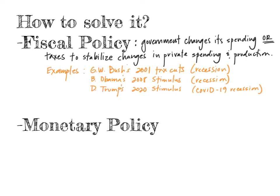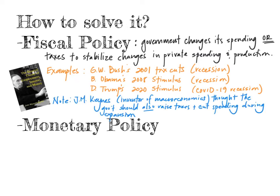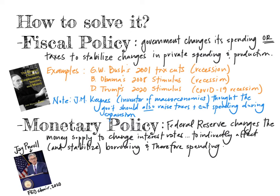Every president, Democratic and Republican, since the 1930s has basically practiced fiscal policy to stabilize the economy. The government changes its spending and taxes — for example, a tax cut during a recession, like George W. Bush did. During the 2008 Great Recession, Barack Obama used a stimulus, increasing government spending. Donald Trump in 2020 used a stimulus for the COVID-19 recession, expanding government spending. It's super important to remember that the founder of macroeconomics, John Maynard Keynes, thought the government should also raise taxes and cut spending during expansions — though politicians prefer not to do either of those things, as it's politically unpopular. Monetary policy is similar in effect, but uses a different set of tools.